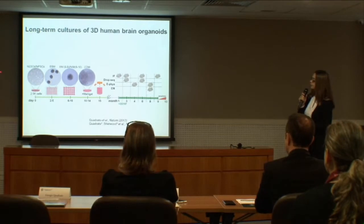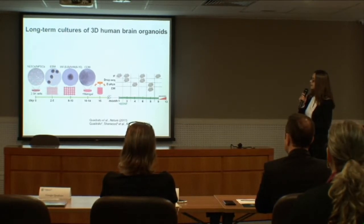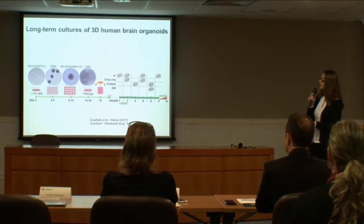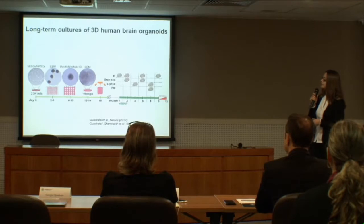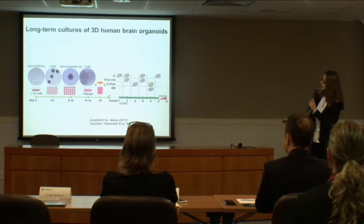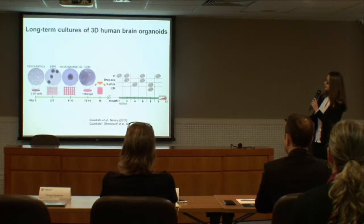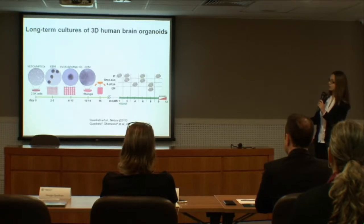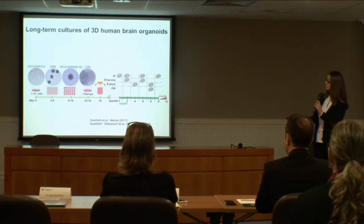We start from monolayer culture of pluripotent stem cells, then dissociate those cultures into single cells and plate about 2000 cells in 96-well plates. We make embryoid bodies, transfer them, and do neural induction. Then we embed them in Matrigel, and you can see buds of neuroectoderm forming after this embedding.